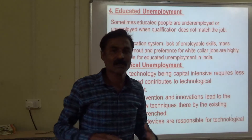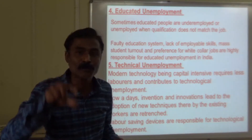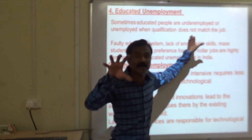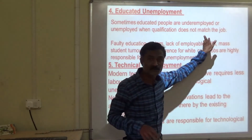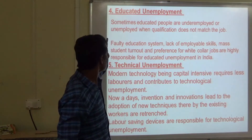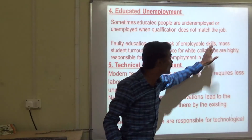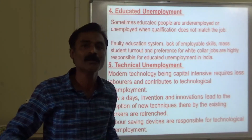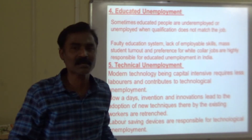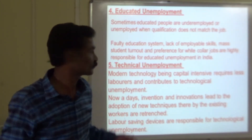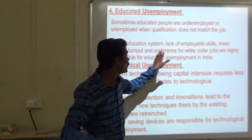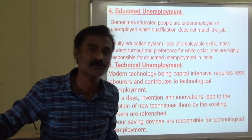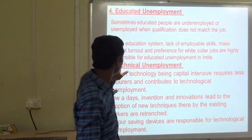Next is educated unemployment — when an educated person cannot get suitable jobs. Sometimes educated people are unemployed when their qualification does not match the job. This is a very important point. Causes include a faulty education system, lack of employable skills, mass student turnout — for example, in India about 10 to 15 lakh engineers graduate every year — and preference for white-collar jobs. People who have completed engineering or BSc would not prefer hard-core manual jobs; they always expect white-collar jobs.